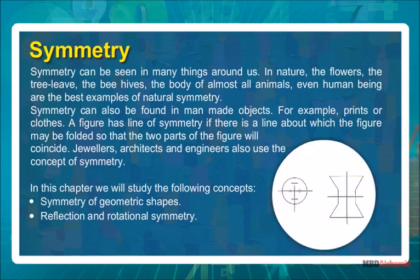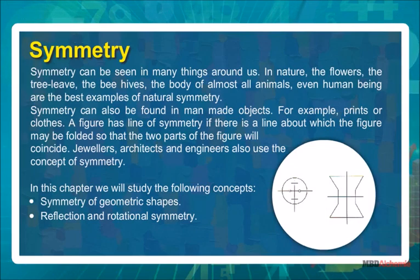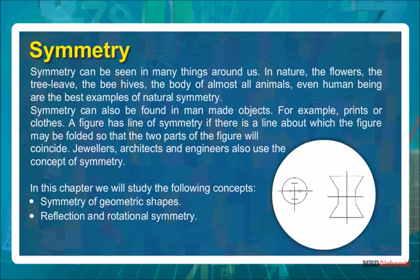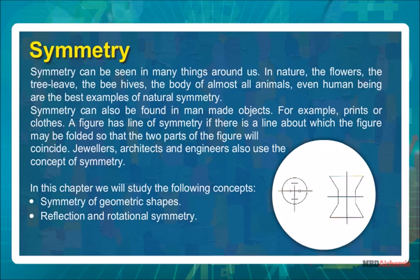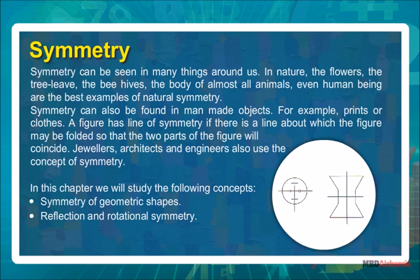Symmetry can be seen in many things around us — in nature, the flowers, the tree leaves, the beehives, and the body of almost all animals. Even human beings are the best examples of natural symmetry. Symmetry can also be found in man-made objects, for example prints on clothes. A figure has a line of symmetry if there is a line about which the figure may be folded so that the two parts coincide. Jewelers, architects, and engineers also use the concept of symmetry.